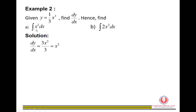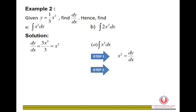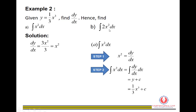Hence, to find ∫x² dx: since dy/dx = x², we integrate both sides with respect to x. Integrating dy/dx with respect to x gives y, and substituting y = (1/3)x³ gives ∫x² dx = (1/3)x³ + c.